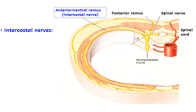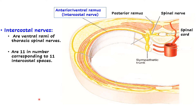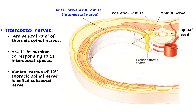How many thoracic nerves are there in total? We have 12 — T1 to T12 thoracic spinal nerves. Intercostal nerves are the ventral rami of thoracic spinal nerves. There are 11 intercostal nerves corresponding to 11 intercostal spaces, and the last one — the ventral ramus of the 12th thoracic spinal nerve — is known as the subcostal nerve, as it runs below the 12th rib with no rib beyond it.